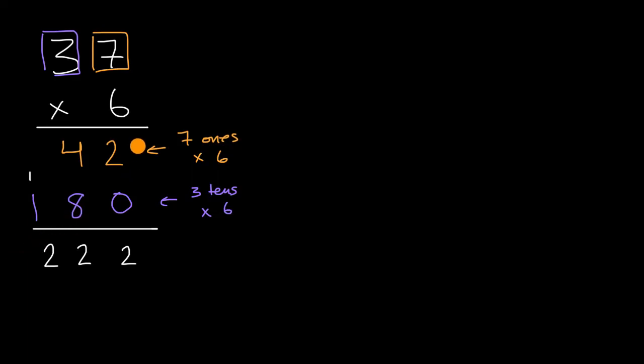In a previous video, we figured out a way to multiply a two-digit number times a one-digit number. We broke up the two-digit number in terms of its place value. The three in the tens place is three tens, and this is seven ones. So we viewed 37 sixes as 30 sixes (three tens times six) plus seven sixes (seven times six), and then added those together to get 222.